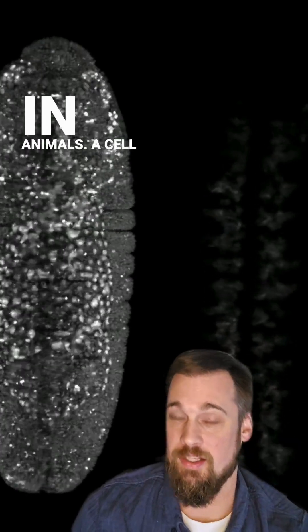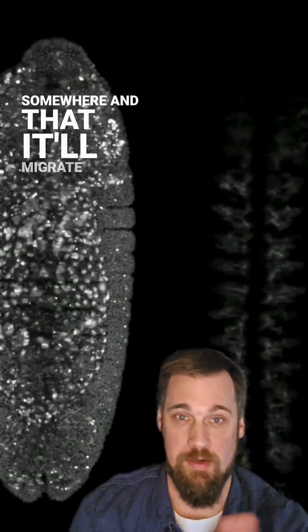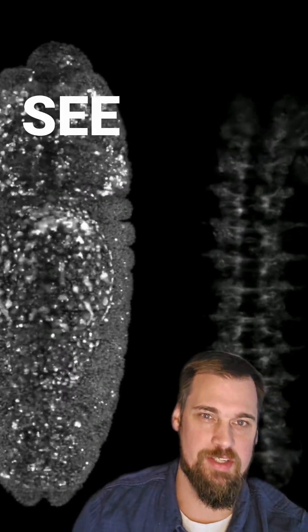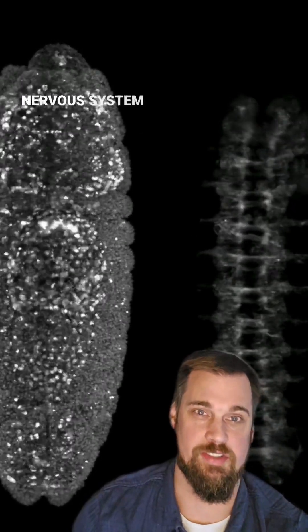And this is common in animals. A cell will be born somewhere and then it'll migrate during development. And another cool part about this video is right about now you can start to see the ghostly outline of the nervous system developing.